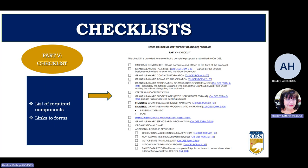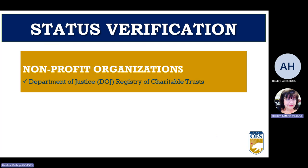The checklist includes all required components and links to each form under the additional forms section. These forms may or may not be required depending on what you have in your budget. For example, if you do not have out-of-state travel, you do not need to include that form with your proposal.